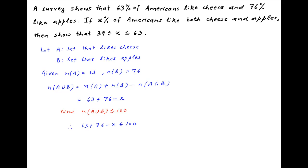Therefore, 63 plus 76 minus x is less than or equal to 100, which gives x is greater than or equal to 139 minus 100. Therefore, the number of people who like both cheese and apples is greater than or equal to 39. Let's call this Condition 1.